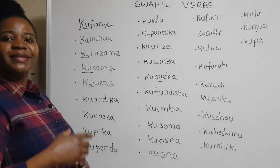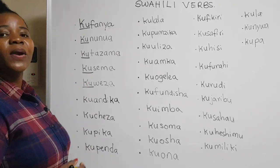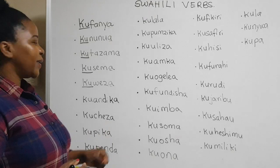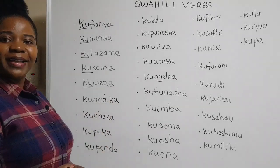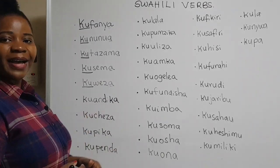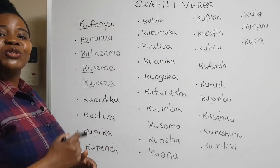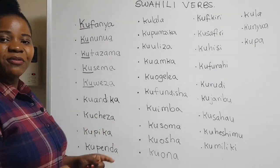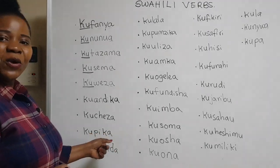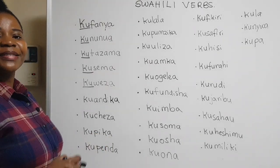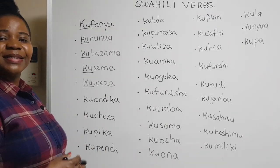'Kusema' is 'to speak' and 'sema' is 'speak.' 'Kuweza' is 'to be able' and 'weza' is 'able.' 'Kuandika' is 'to write' and 'andika' is 'write.' 'Kucheza' is 'to play' and 'cheza' is 'play.'